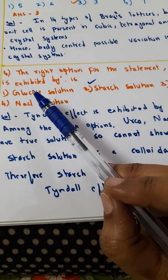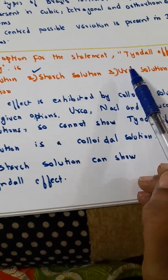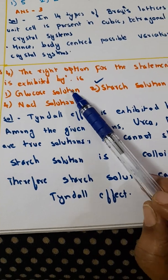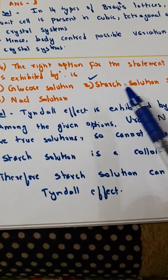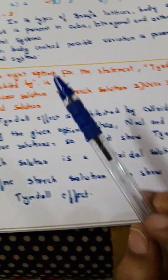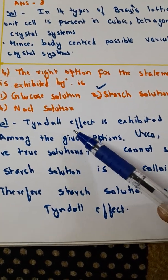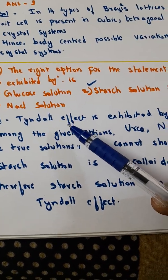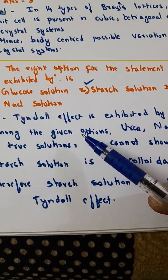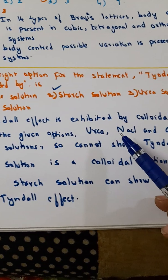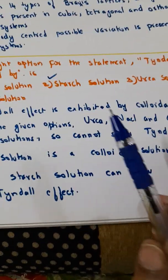The next and the fourth question for today is: the right option for the statement 'Tyndall effect is exhibited by' - the options are glucose solution, starch solution, urea solution, NaCl solution. You know what does it mean by Tyndall effect? Already we have learned in that theory part. Tyndall effect is exhibited by, it is only shown by colloidal solutions.